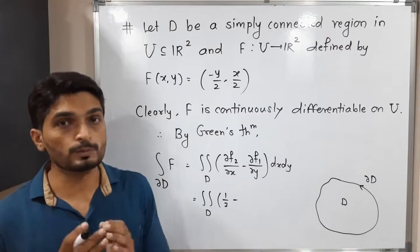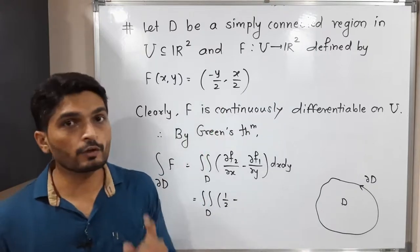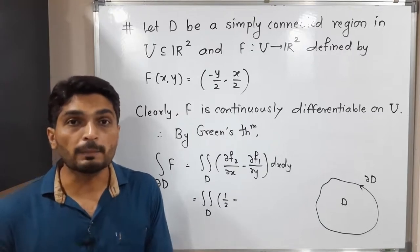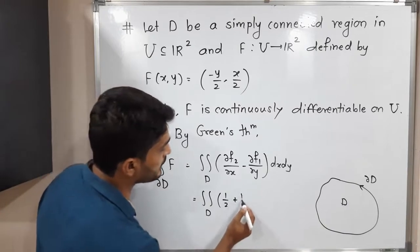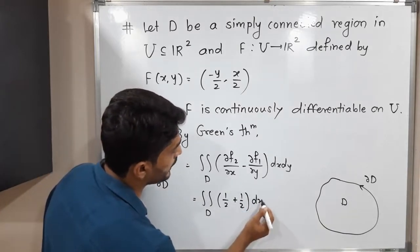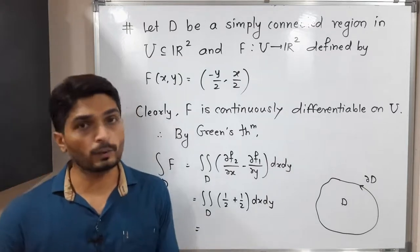Minus derivative of F₁ with respect to y: -1/2 is constant, derivative of y is 1, so the derivative will be -1/2. But we already have minus, so minus minus gives plus 1/2.